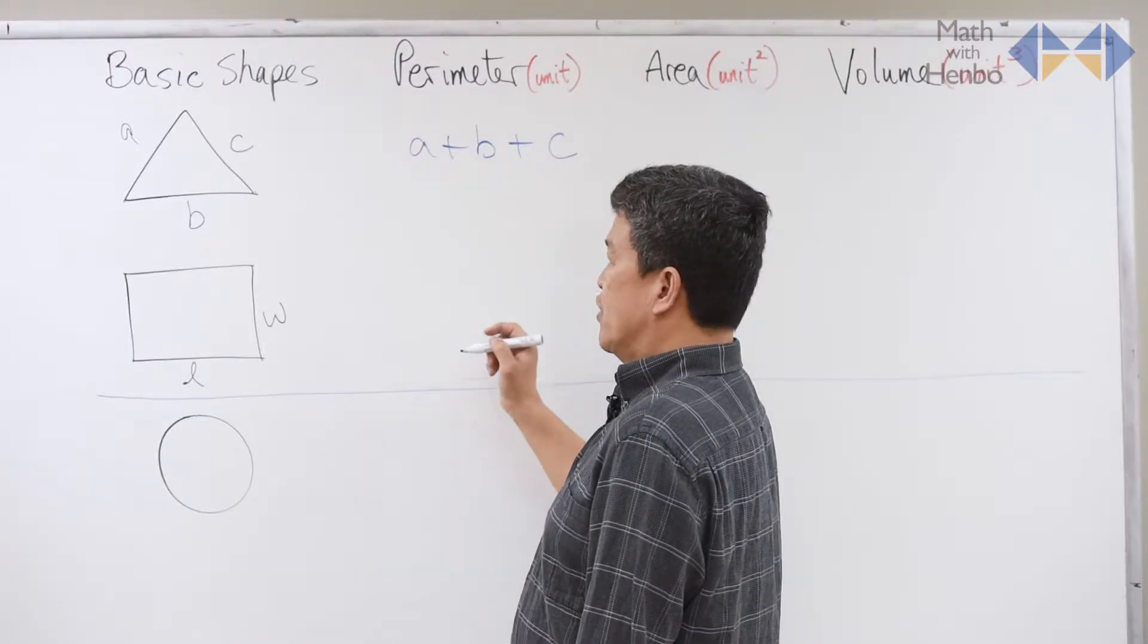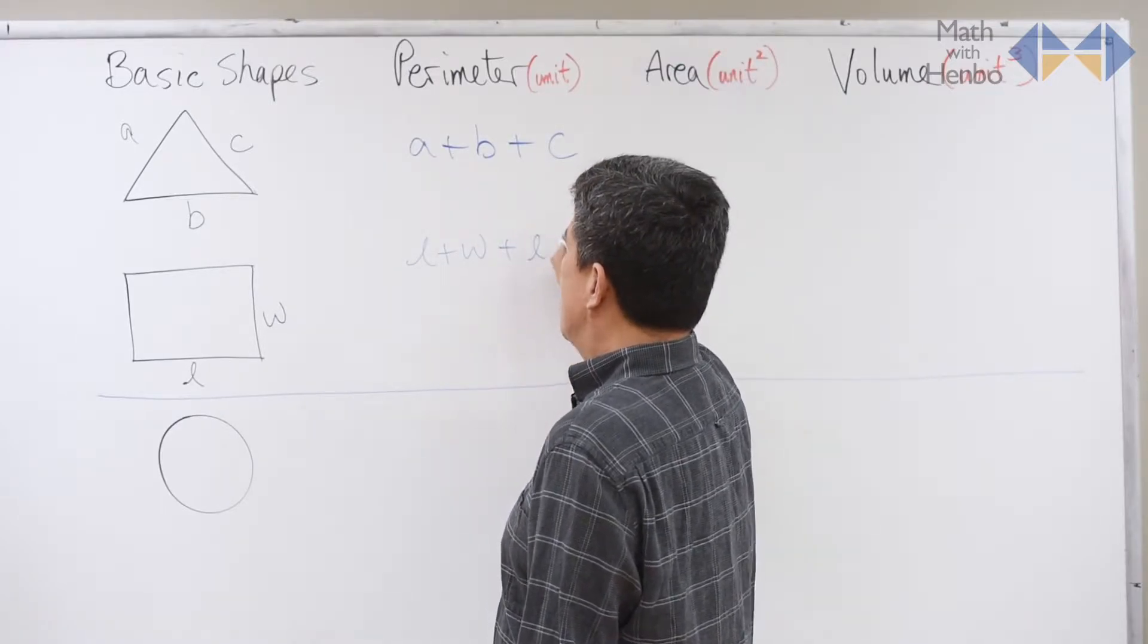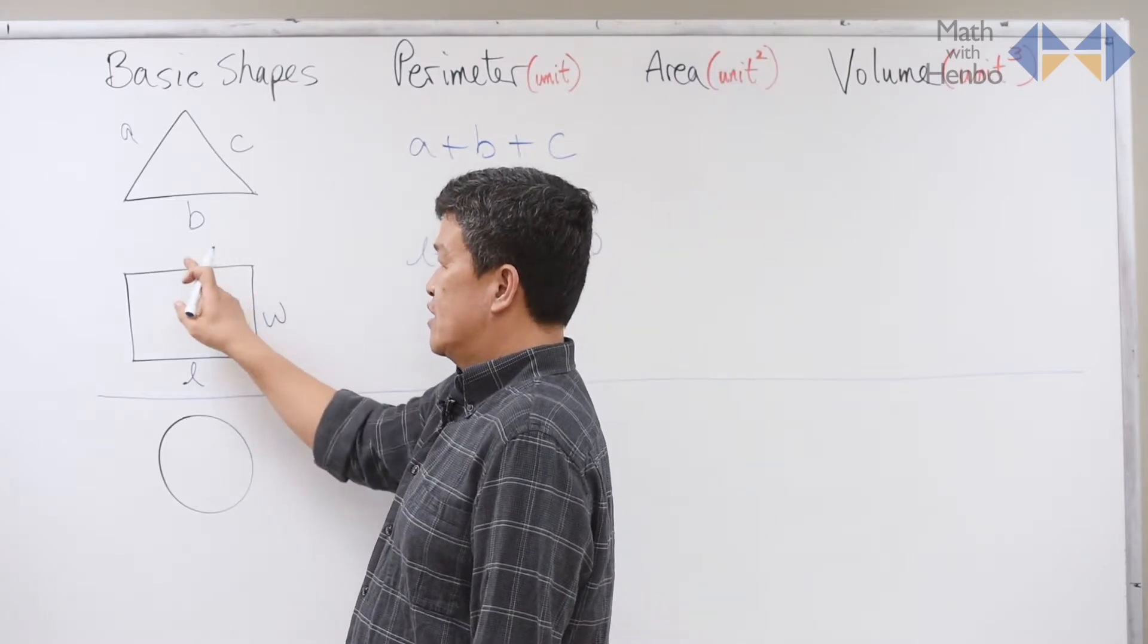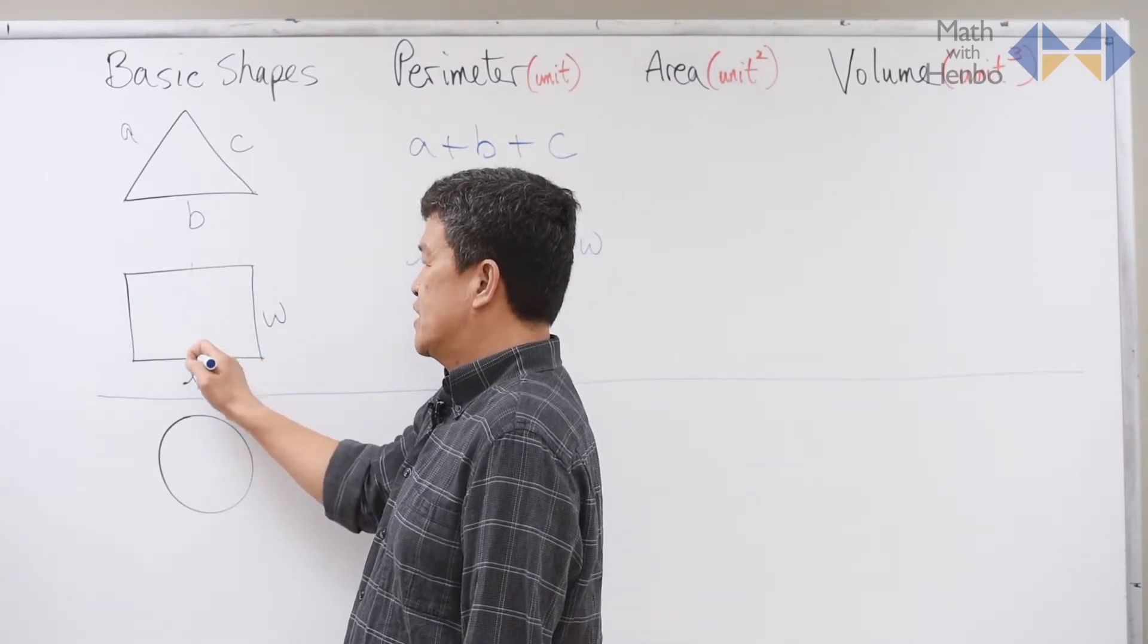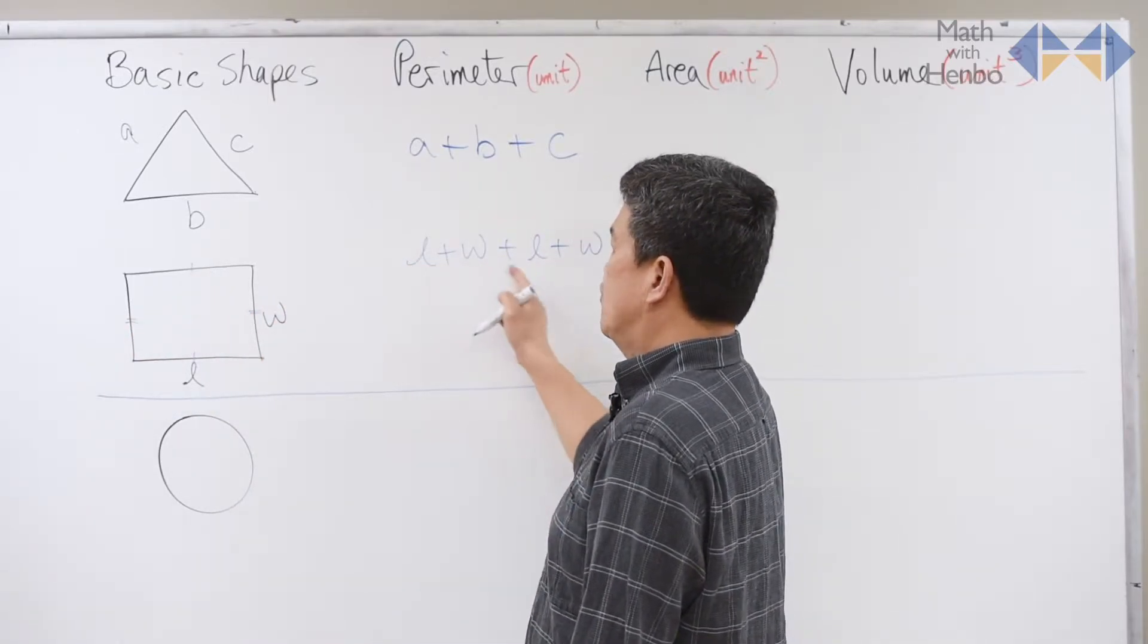For the rectangle, there are three ways. You could do length plus width, and then length plus width. Remember, length plus width only gives you two sides. There's opposite sides that you must consider. They're equal to one another. So there are two widths and two lengths.